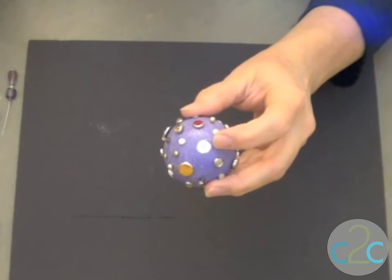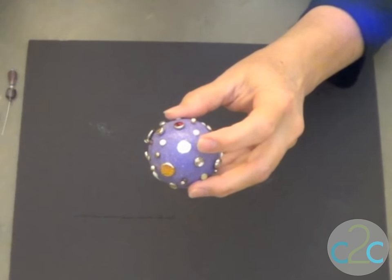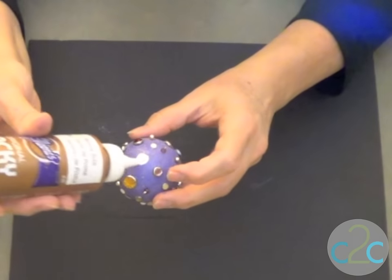Going back up to the top, we're going to create a hanger now. So this large hole is a little too wide to stick jewelry findings in, so we're going to narrow it up a little bit.